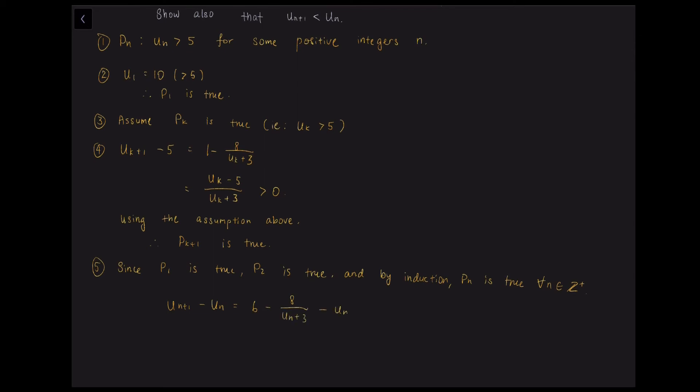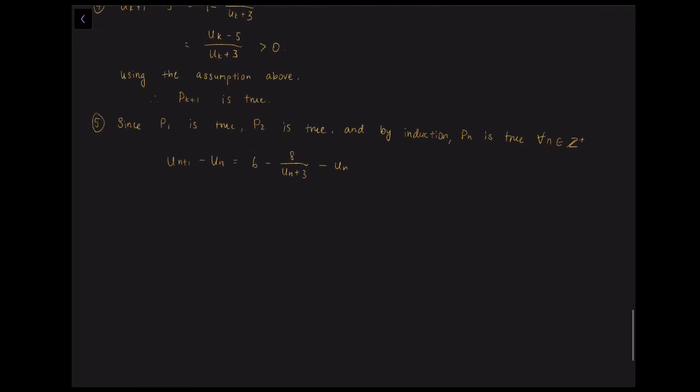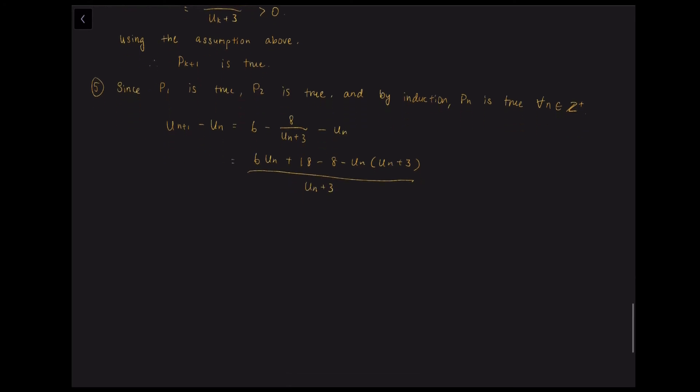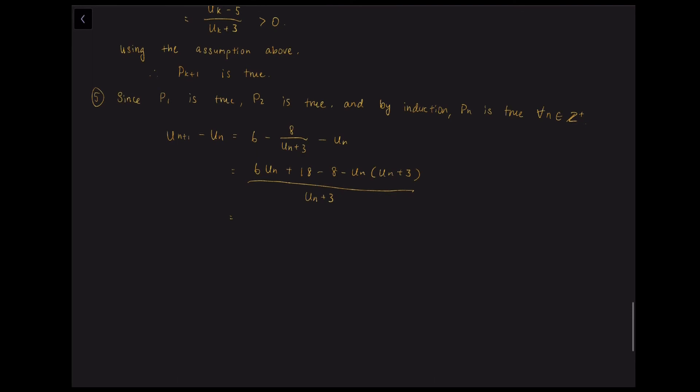Copy down un plus 1 which is 6 minus 8 over un plus 3 and minus un. And then we can simplify this equation. So make it into a single fraction. We have 6 times un plus 18 minus 8 minus un times un plus 3 over un plus 3. Which can be further simplified as 10 plus 3 un minus un squared minus un over un plus 3.